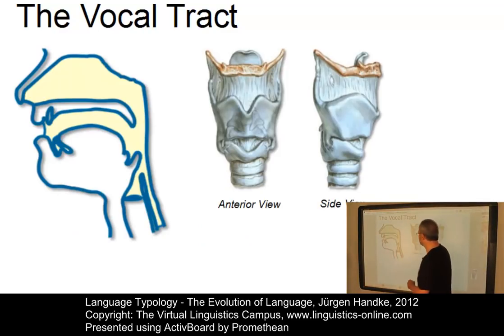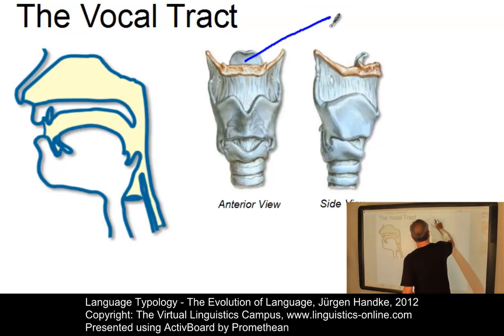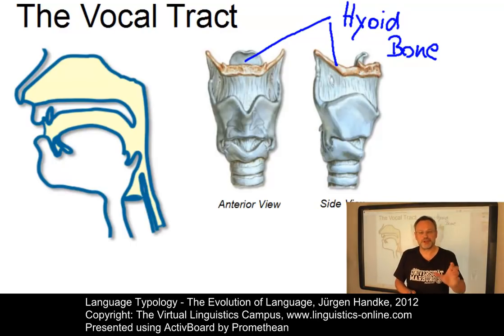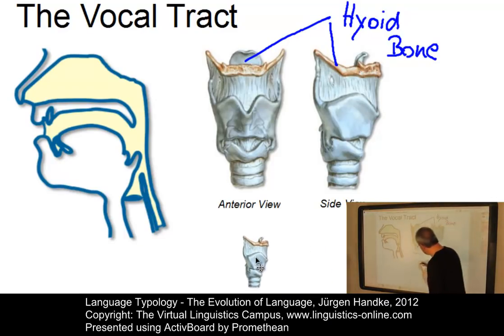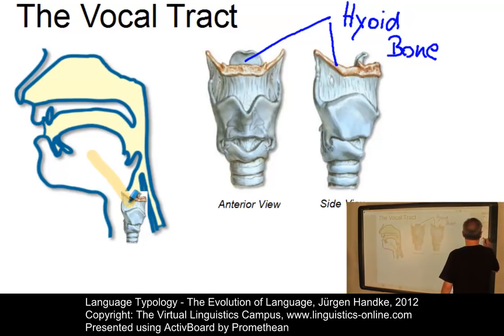Here you see the vocal tract on the left-hand side and two views of the larynx: the anterior view and the side view. On top of the larynx we have a very interesting bone referred to as the hyoid bone. This horseshoe-shaped hyoid bone is linked to the tongue by means of a particular connection referred to as the hyoglossus. Moving the larynx into the vocal tract illustrates this connection between the tongue and the larynx — the hyoid bone and the so-called hyoglossus.